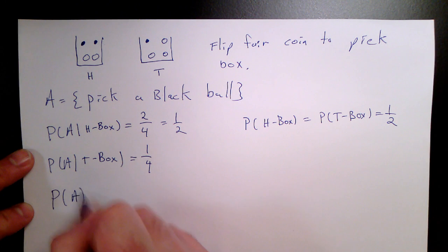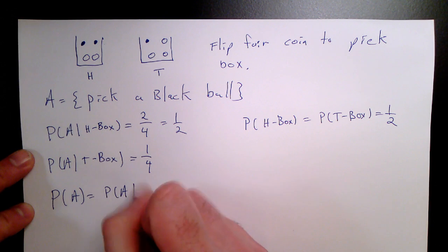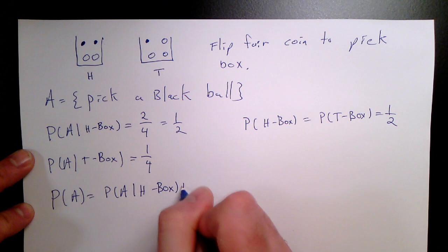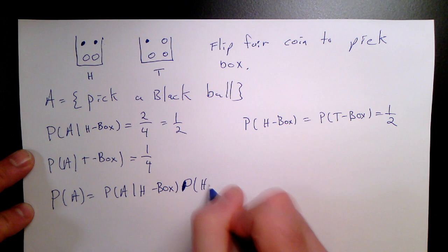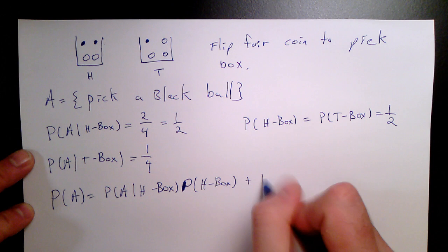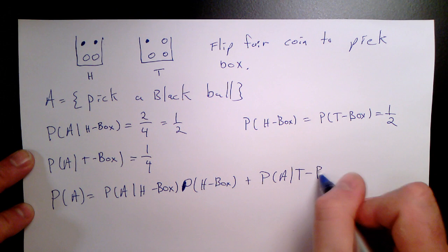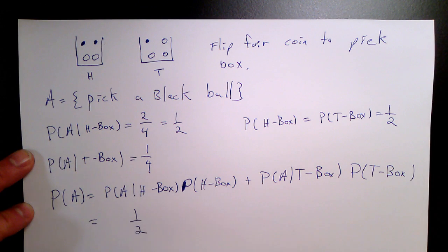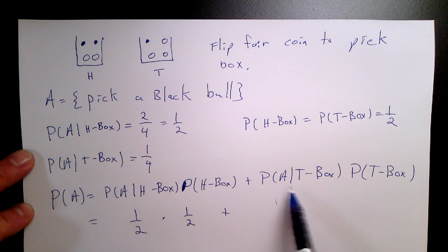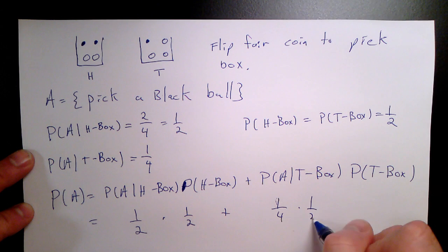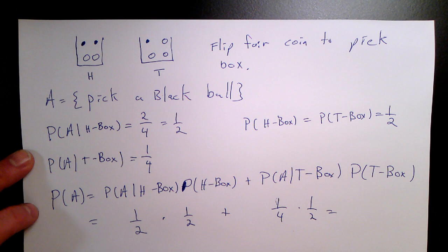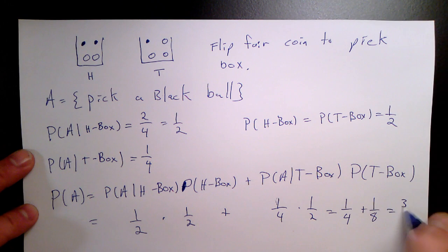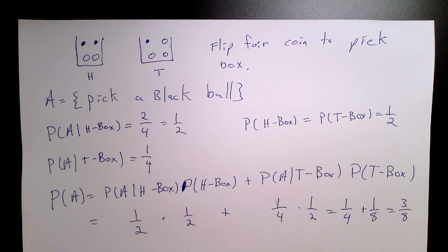Putting this all together, we use the law of total probability: P(A) equals P(A|H box)·P(H box) plus P(A|T box)·P(T box). What at first seemed like a complicated calculation is now broken into small elements we already know. That gives us (1/2)(1/2) plus (1/4)(1/2), which is 1/4 plus 1/8, which equals 3/8. The chance of picking a black ball is three eighths.